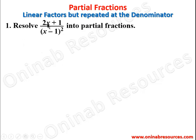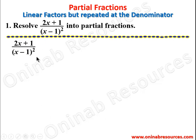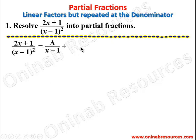Problem one: resolve (2x + 1) / (x - 1)² into partial fractions. To resolve this into a partial fraction, we take two constants. The first constant takes one of these factors, while the second constant takes the whole factor raised to power two. So this gives us A over (x - 1), which is the non-repeated factor, then plus B over (x - 1)².